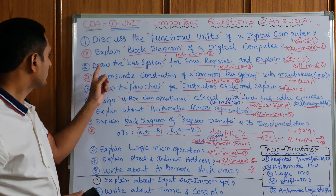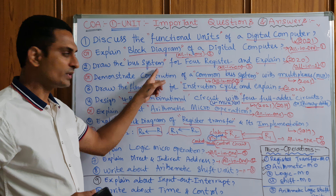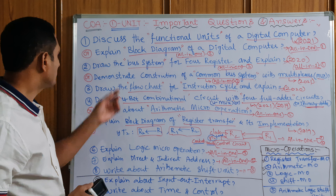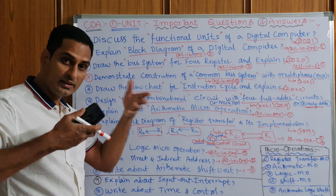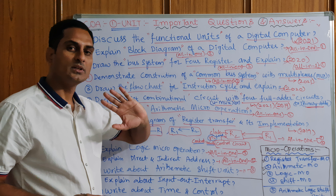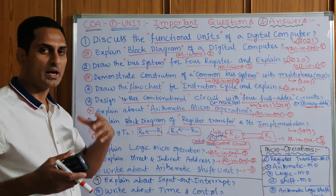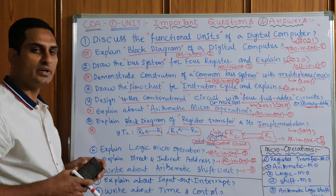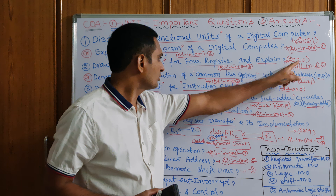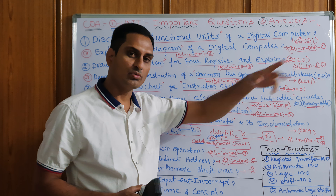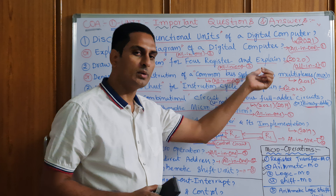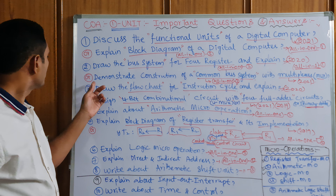One more question: draw the bus system for four registers and explain. 'Draw the bus system' means this is the common bus system only — inside the diagram we have four registers and four multiplexers. I have already shot a video on this and you can see it in my description channel. This was given in the 2020 question paper and All-in-One model paper one and model paper three.